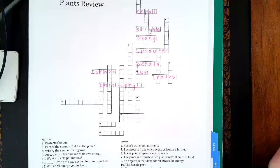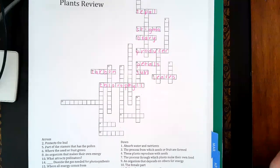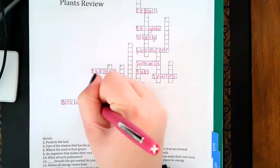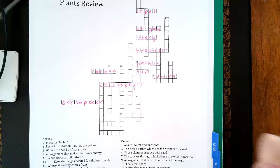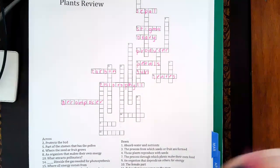An organism making energy by breaking down decaying matter - that's a decomposer. The gas byproduct - that's oxygen, the thing we need.